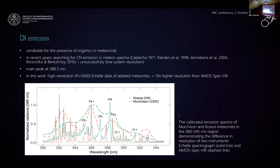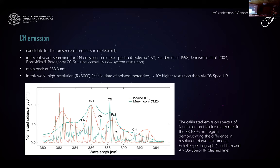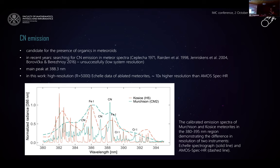We focus on the presence of CN emission in spectra of ablating meteorites. CN emission is a suitable candidate for indicating the presence of organics in meteorites — specifically bodies originating from asteroid orbits. In recent years, several works searched for this band structure in meteorite spectra, but unsuccessfully due to the lower resolution of the systems, in which the CN line is blended with surrounding iron lines. In this work, we present results obtained by high-resolution échelle spectrograph, which has approximately 10 times higher resolution than the AMOS spectrograph.